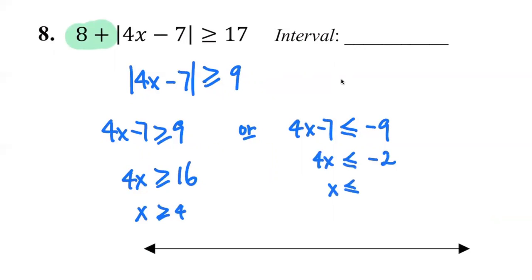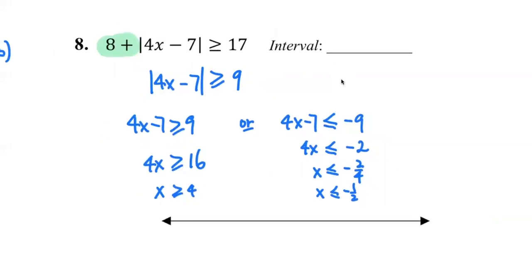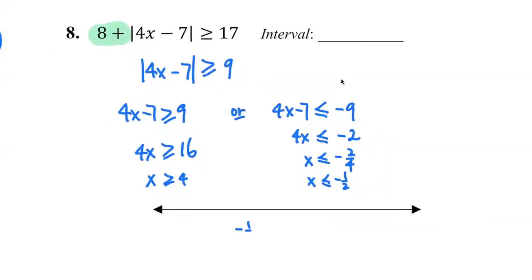Negative two on the right, and then you divide by four, so you have negative two over four which results in negative one-half. So we say the solutions will be less than or equal to negative one-half or greater than or equal to four.